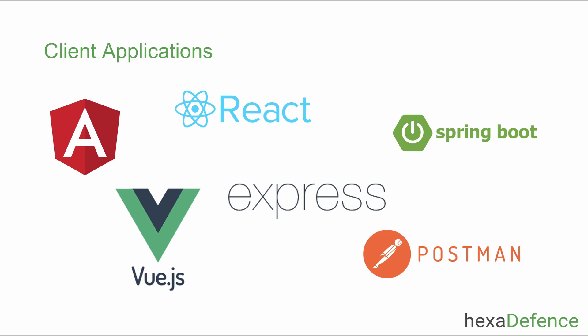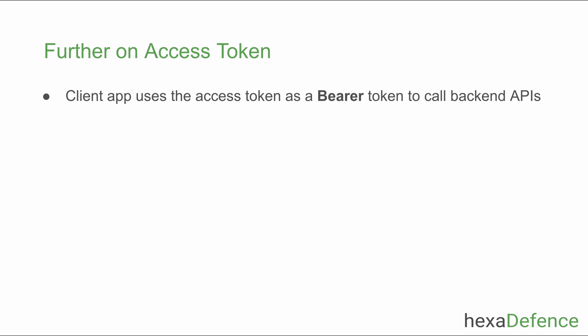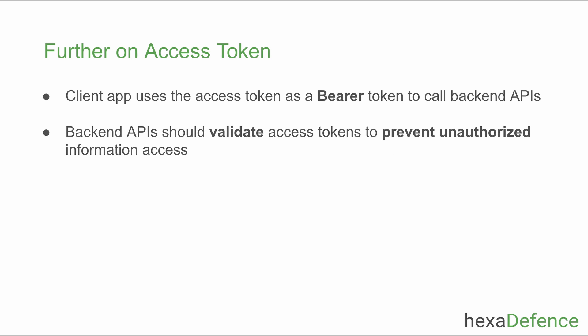The client application can be anything — a single page application like Vue, Angular, or React, a backend application like Spring Boot or Express.js, or an HTTP client like Postman. The client app will include the access token as a bearer token and call the backend API. Backend APIs should be able to verify these tokens, otherwise any party can send requests and steal data from the backend API.